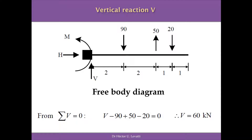In order to establish the value of the vertical reaction, we write the summation of forces in the vertical direction equal to zero by the principle of equilibrium. The vertical reaction V is positive, minus 90 kN which is coming down, plus 50 kN which is positive because it's going up, and minus 20 kN which is coming down as well. Rearranging, V equals 90 minus 50 plus 20, which is 60 kN. So the vertical reaction is 60 kN.